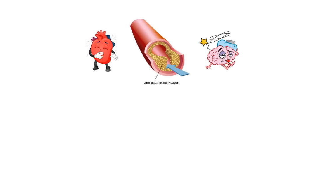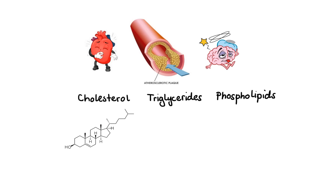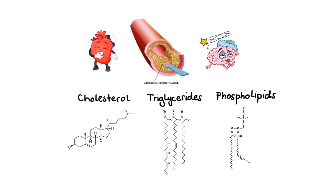There are three major lipids in the blood, namely cholesterol, triglycerides, and phospholipids. Cholesterol is necessary for the synthesis of bile acid, steroid hormones, and to maintain the integrity of cell membranes. Triglycerides are composed of glycerol and three fatty acids, which serve as an important source of energy that can be stored throughout the body. And lastly, phospholipids are a major component of all cell membranes and function as emulsifiers.